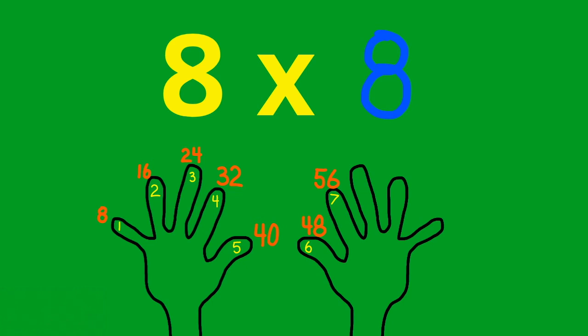We know that 8 times 8 is going to be twice the size than 8 times 4. And since 8 times 4 is 32, then 8 times 8 is going to be 32 times 2, or 64.